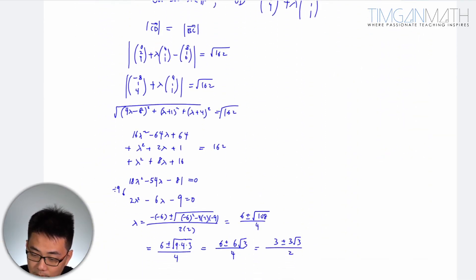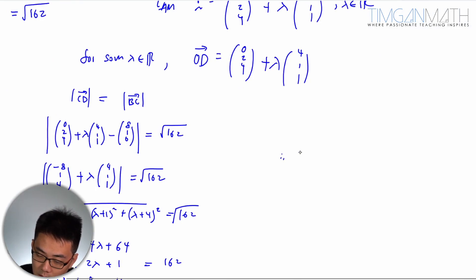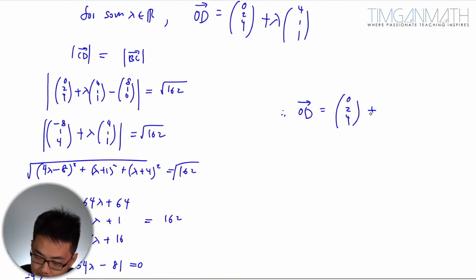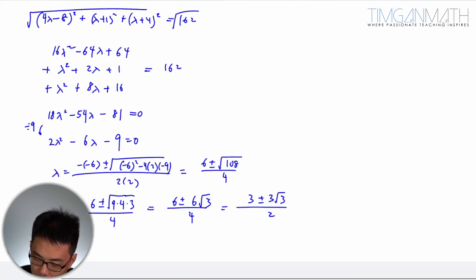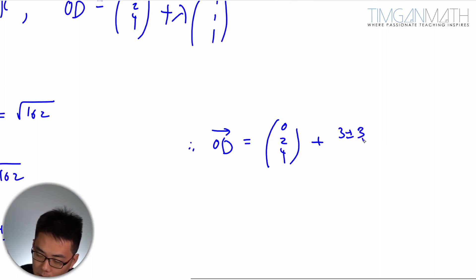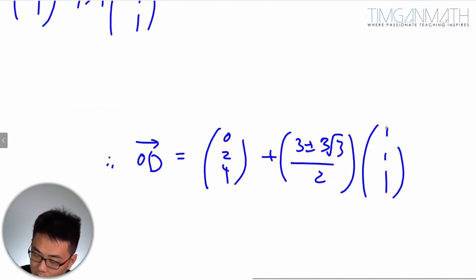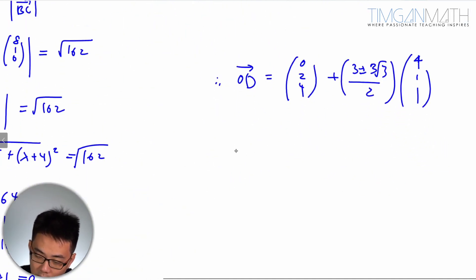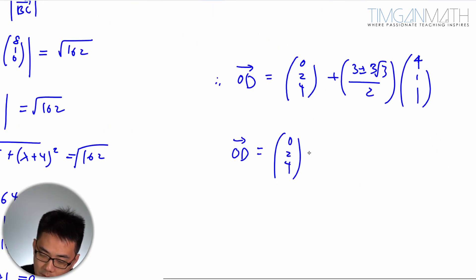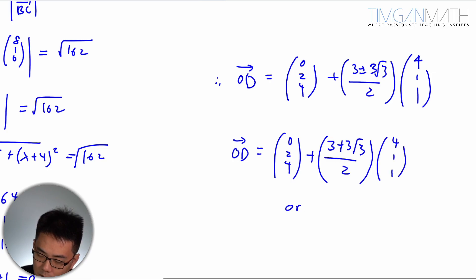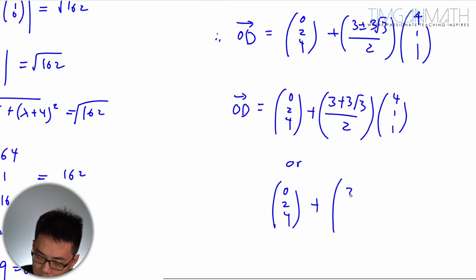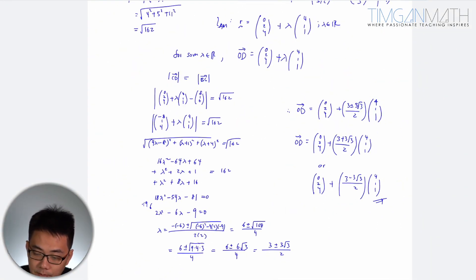So we got OD. OD equals (0, 2, 4) plus or minus (3√3 / 2) × (4, 1, 1). That is the answer — two positions for D. And that's how we do the second part.